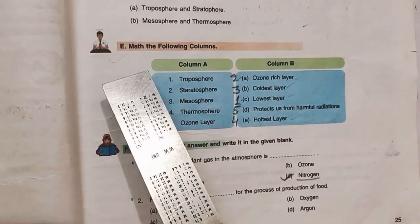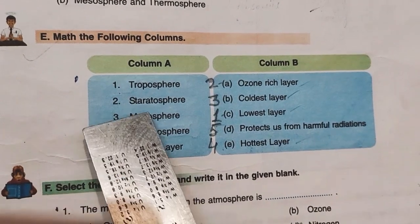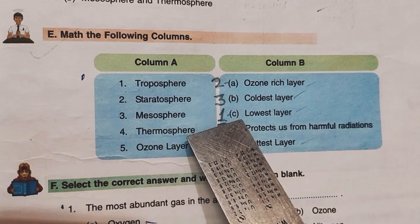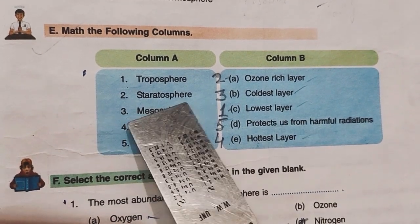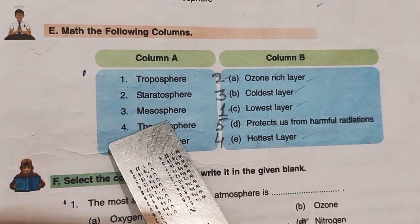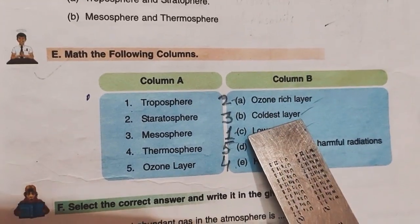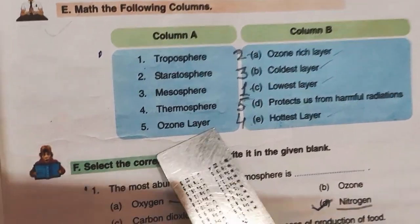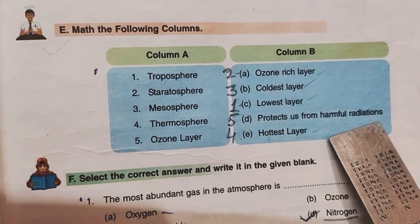See the set E. Match the following columns. Number 1, Troposphere matches lowest layer. Stratosphere is ozone-rich layer. Mesosphere, coldest layer. Thermosphere, hottest layer. Ozone layer protects us from harmful radiations.